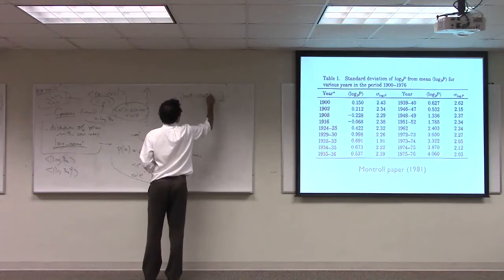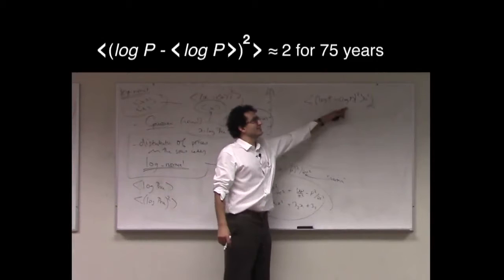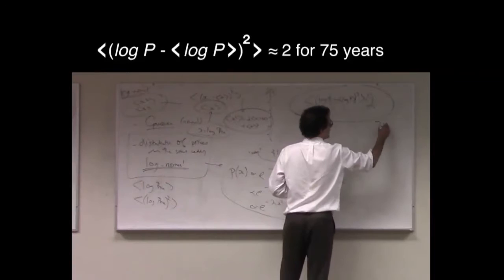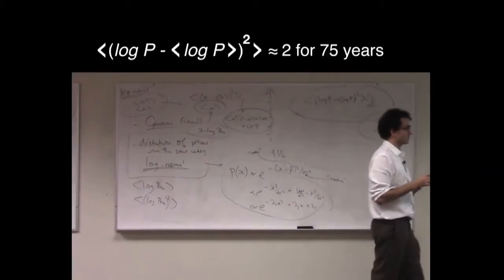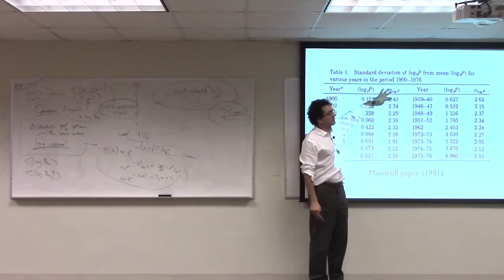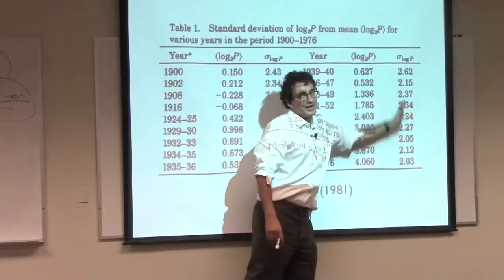The deviation, in other words, from the average price, or the average log price, the squared deviation from the average log price, is constant at around 2 over 75 years. And Montreux says this is worthy of explanation. This here we already understand. We understand why prices grow, but we don't understand why their variance stays constant.